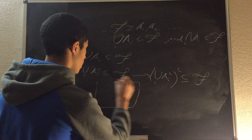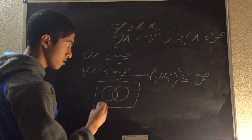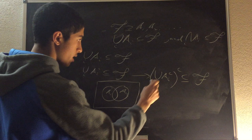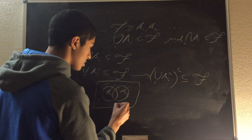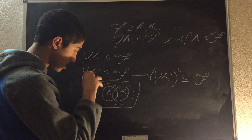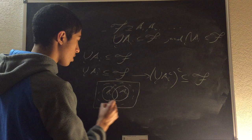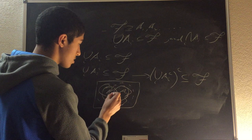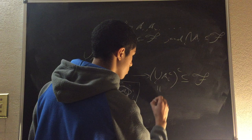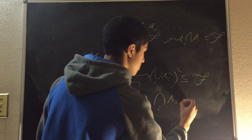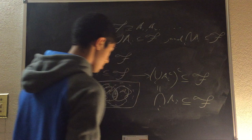Then we can take the complement of this entire thing — the complement of the union over i of A_i complement — and say that is also in our sigma-algebra F. If we draw a Venn diagram with only two sets A1 and A2, the complement of A1 is everything outside A1, and the complement of A2 is everything outside A2 including elements only in A1. The union of those two complements is everything except the intersection. So the complement of that union gives us only the intersection. This implies that the intersection over i of A_i is in our sigma-algebra F.